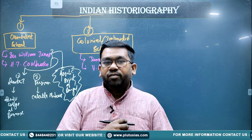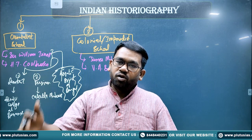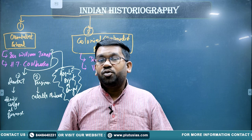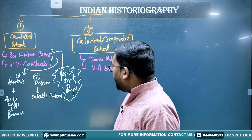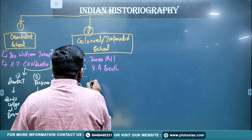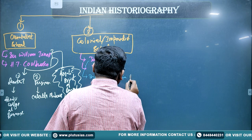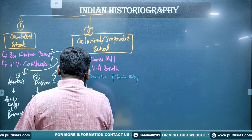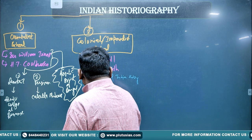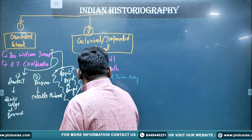According to James Mill, the ancient period was ruled by Hindus, the medieval period was ruled by Muslims, and the modern period is ruled by the British. The most important theme of James Mill was this division of Indian history. The second theme is that these people called Indians as barbarians. The most important term they used was 'oriental despotism,' meaning that Indian rulers were mostly despotic.